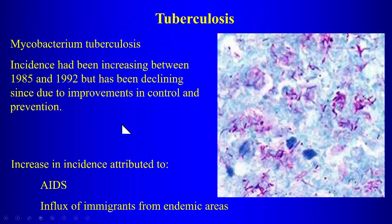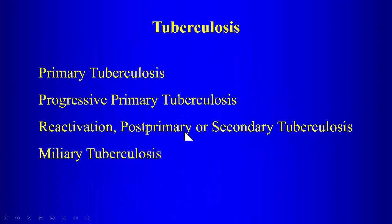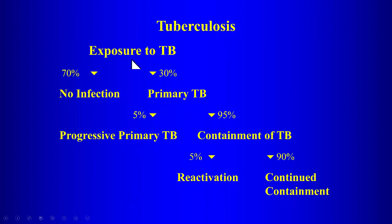Populations at risk for TB include those with any underlying immunological problem, the homeless, prisoners, the immunosuppressed, and interestingly post-gastrectomy patients. Important terms when discussing tuberculosis: primary tuberculosis, progressive primary tuberculosis, reactivation (post-primary/secondary) tuberculosis, and miliary tuberculosis. These are terms you need to be familiar with.